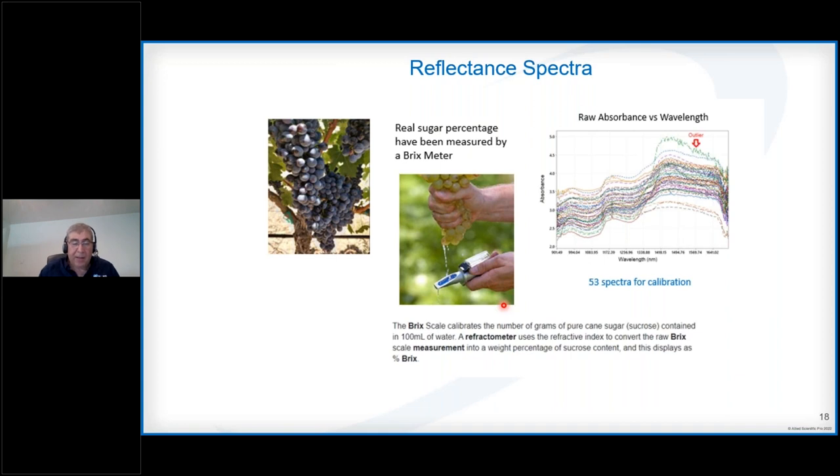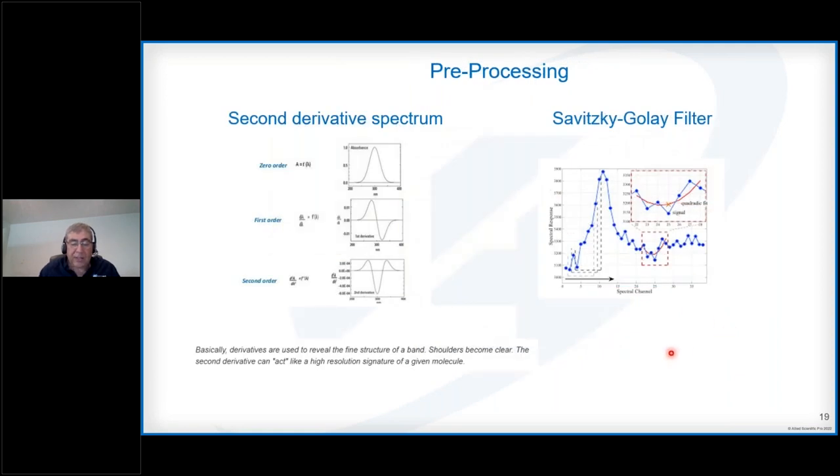One of the first measurements we did was provided by one of our contacts in France who is interested in measuring the Brix content of grapes used for wine. To get the exact measurements, they use a Brix meter, which is a refractometer. The contact also bought the spectrophotometer and measured 52 spectra. You can see there's an outlier here that we're not using. Looking at the spectra is always useful to make sure there are no outliers. We used 52 spectra for calibration. You have to do some preprocessing because the spectra are offset with respect to each other due to scattering of the samples. You need to get rid of this DC offset.